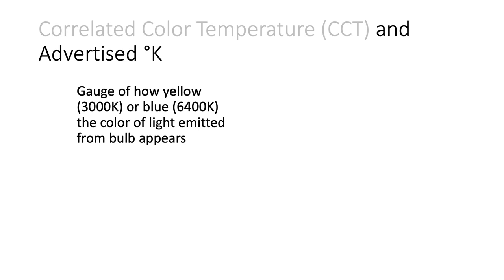Correlated color temperature, or CCT, is related to the advertised K values you see when you purchase your light bulbs. They're closely related because unless you have a spectrometer, you will never know the true CCT value — you can only go by the advertised K value on the box. Generally, the lower the value, such as 3000K, the more yellowish or warm the light is. The higher the number, such as 6400K, the more blue the light is.